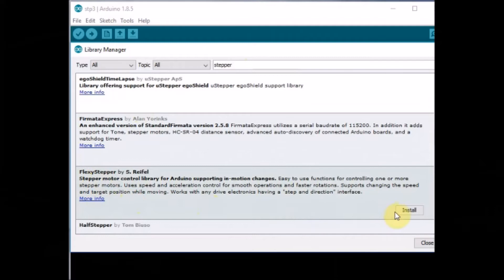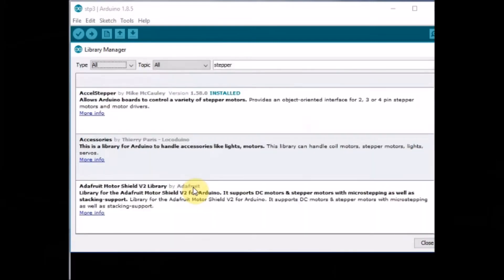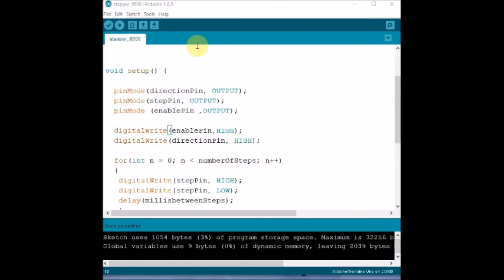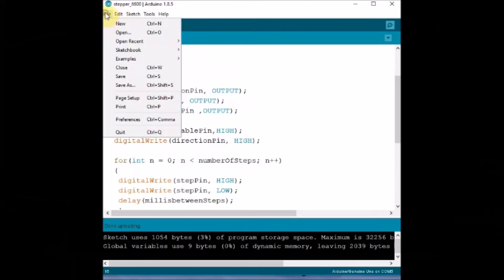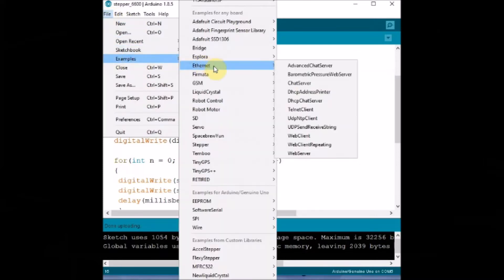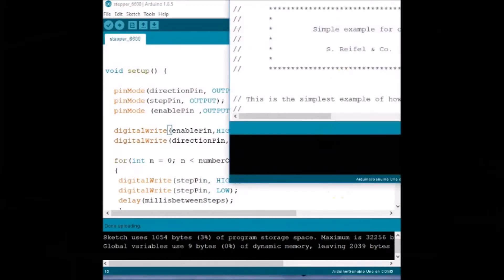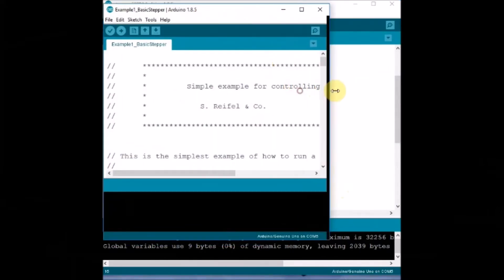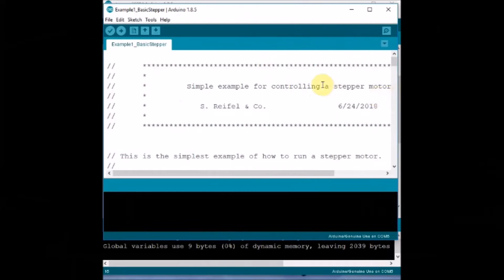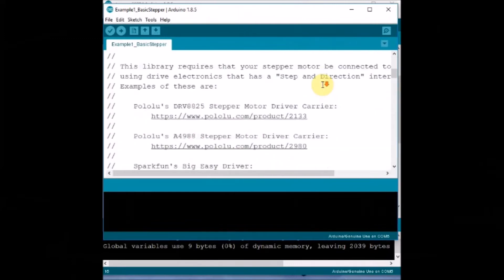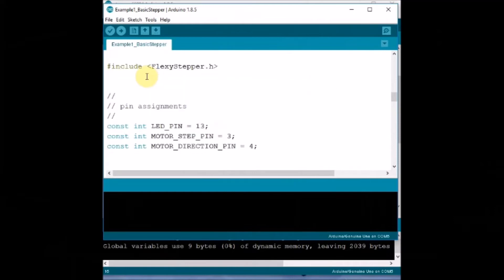Once the flexi stepper library is installed, under files examples, you can see the example codes. Now let us check the code one by one. First example under flexi stepper is basic stepper. Click on that basic stepper to load the code. In this code, we define the step pin as 3 and direction pin as 4. As we did in the last setup, so we are not going to change the pins with the Arduino.